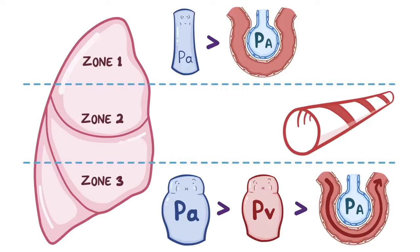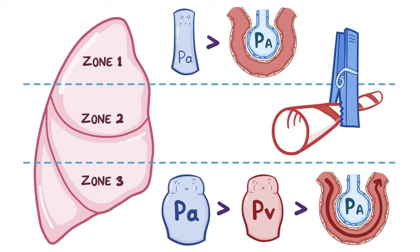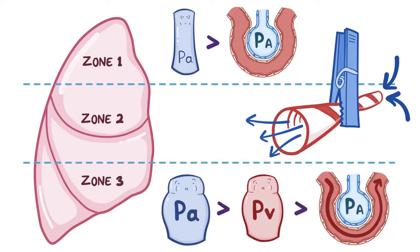It's kind of like a clothespin pinching down a bit on a straw. If you blow air into one end of the straw, the clothespin will make it harder for air to get through the other side. But if there's enough pressure, then the air will overcome the resistance and make it through.